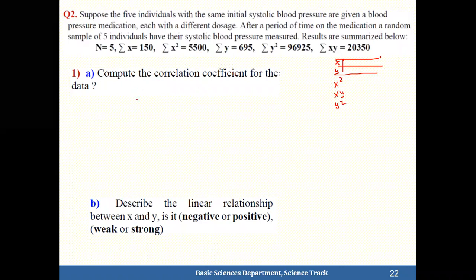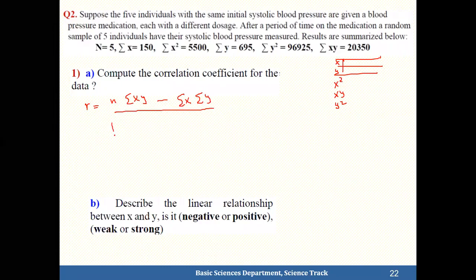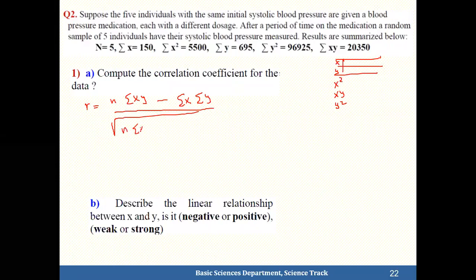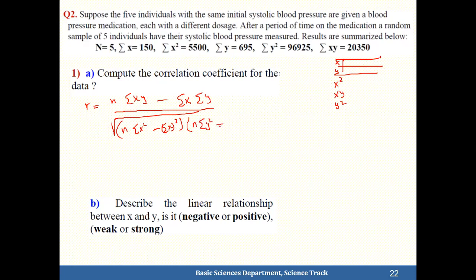Compute the correlation coefficient. The formula is: r = [n·Σxy − Σx·Σy] divided by the square root of [n·Σx² − (Σx)²] times [n·Σy² − (Σy)²]. With n=5, Σxy=20,350 minus... we substitute the given values: Σx=150, Σy=695, Σx²=5500, Σy²=96,925.